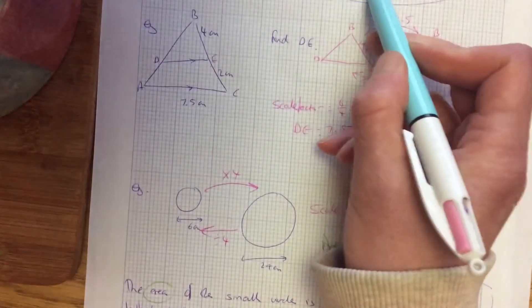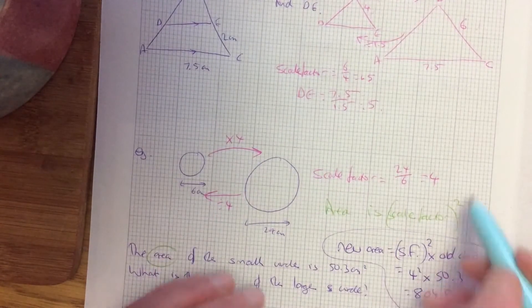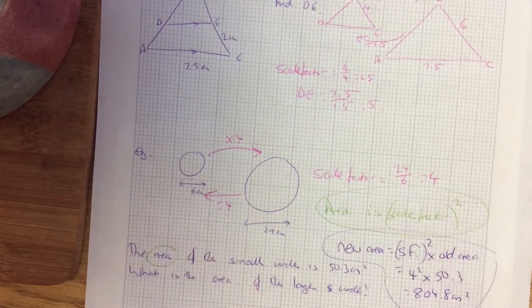Okay so scale factor is new side over old side but when you have area it's scale factor squared.